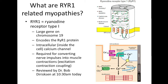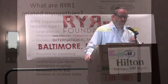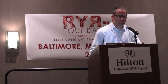What is RYR1? RYR1 stands for the ryanodine receptor type 1, or the skeletal muscle ryanodine receptor. This is a large gene found on the 19th chromosome. We all have this gene — we all have two copies of it. It encodes a calcium channel inside the muscle fiber. This calcium channel is critical for communicating signals from outside the muscle fiber, like a nerve impulse, into muscle contraction. It's how, when our brain tells our muscles to move, that signal gets translated into movement. Bob Dirksen is going to review this in a talk shortly.